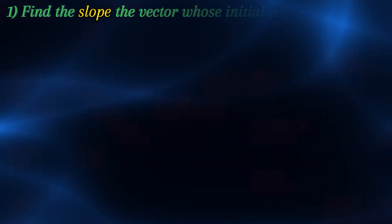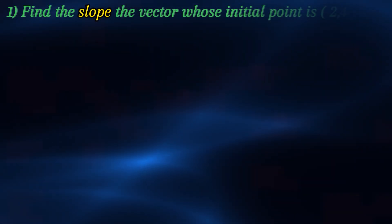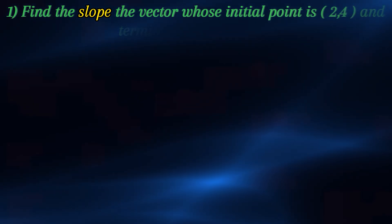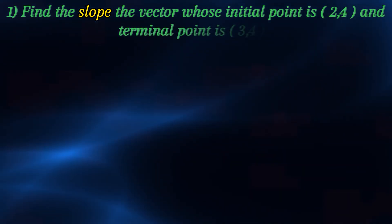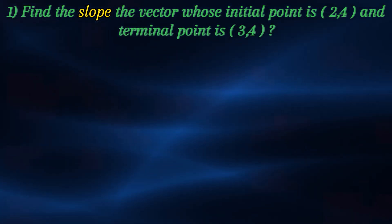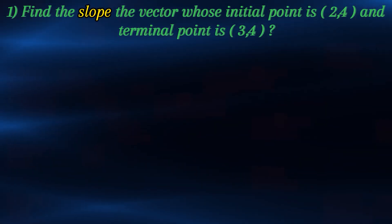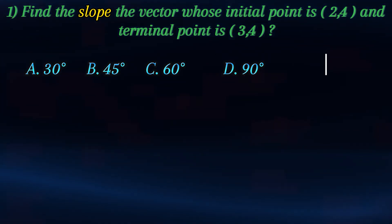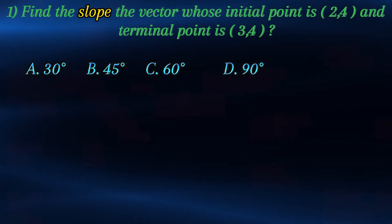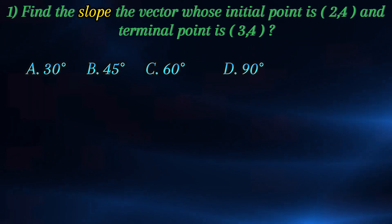I will show you how to find the slope of the vector whose initial point is (2,4) and the terminal point is (3,5). The answer choices are: a) 33 degrees, b) 45 degrees, c) 33 degrees, d) 90 degrees.